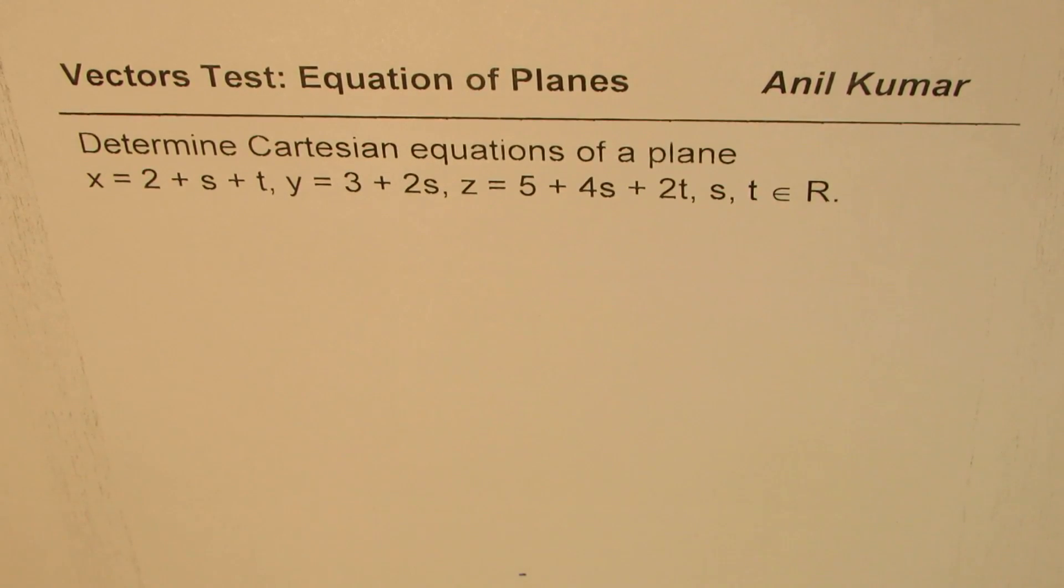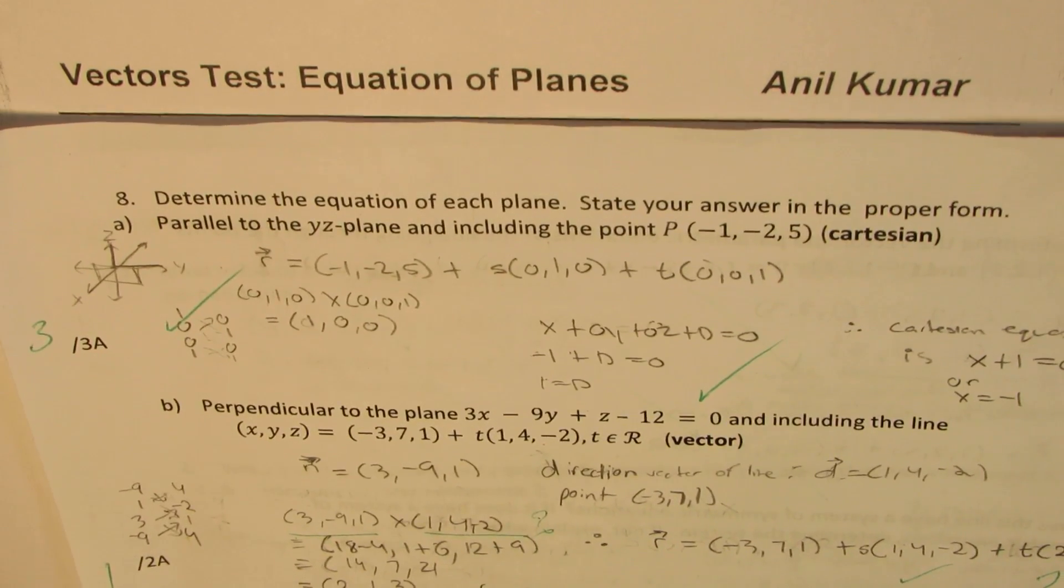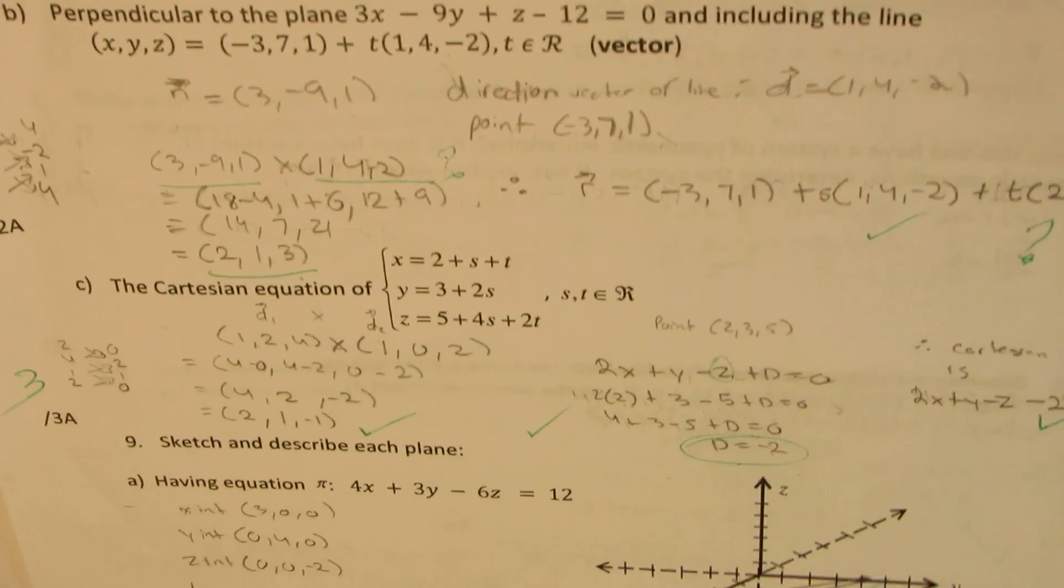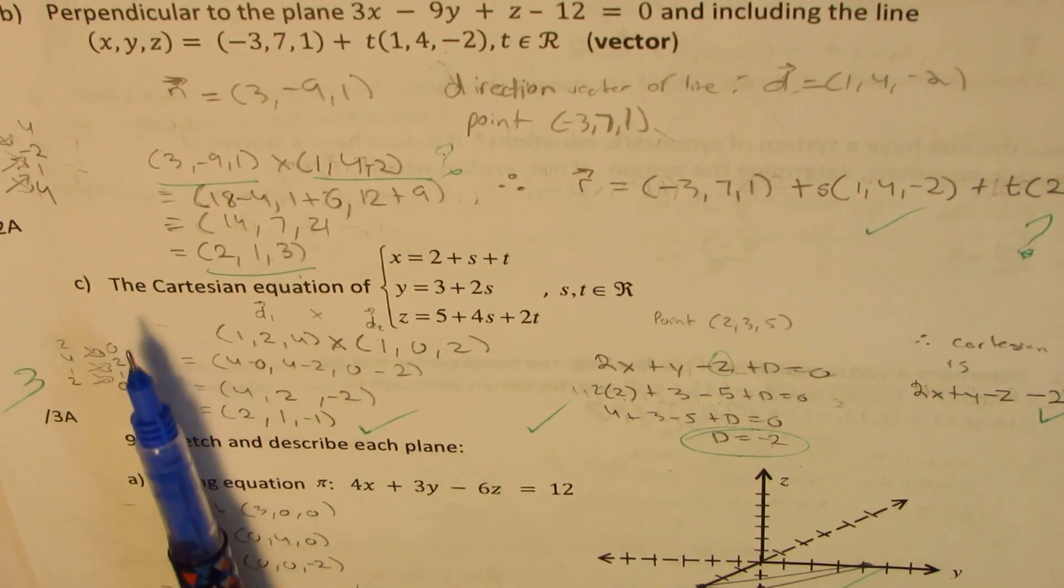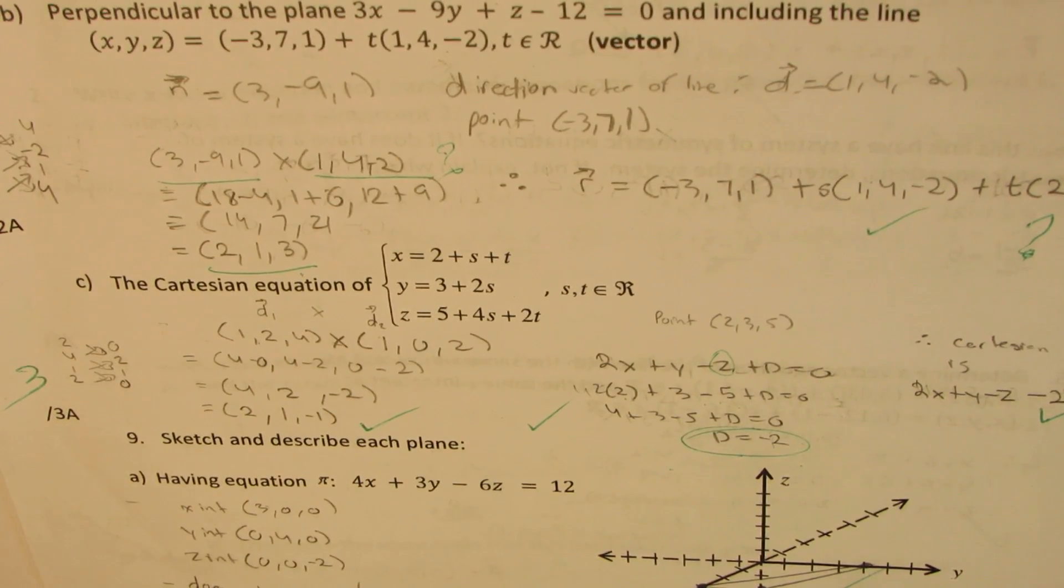I'm Anil Kumar discussing previous test paper questions on vectors and equations of planes. I'm taking up question number eight part C, where we'll find the Cartesian equation from a given set of parametric equations.